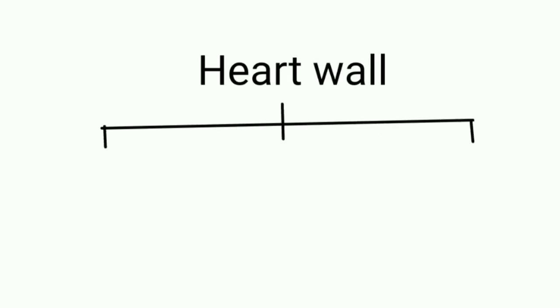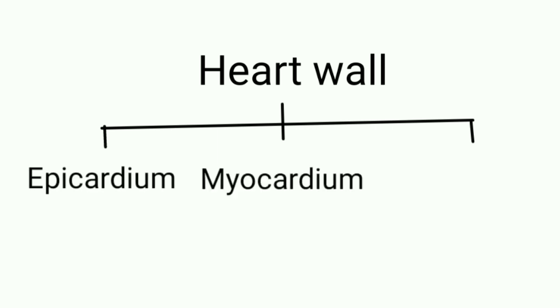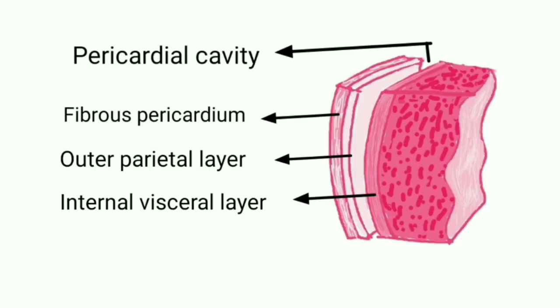Heart wall: the wall of the heart consists of three layers of tissue — a thin outer epicardium, a thick middle myocardium, and a very thin endocardium. The epicardium is a protective layer mostly made of connective tissue. It is considered as the continuation of the serous pericardium. The epicardium refers to both the outer layer of the heart and the inner layer of the serous visceral pericardium.